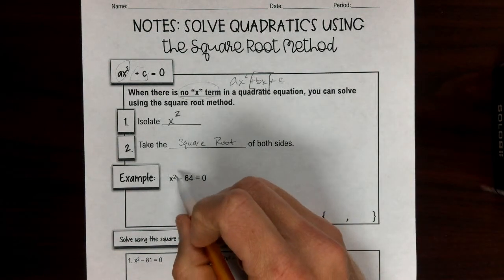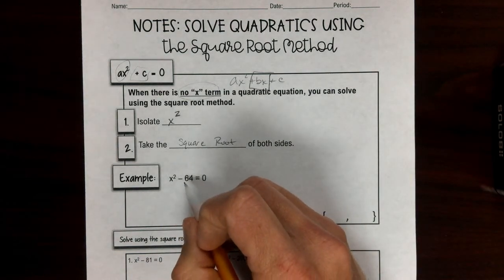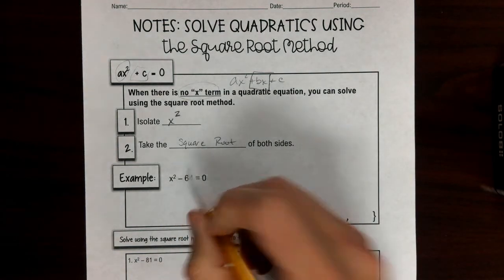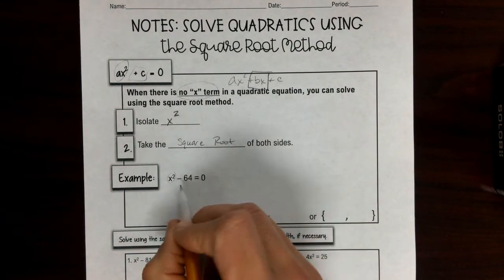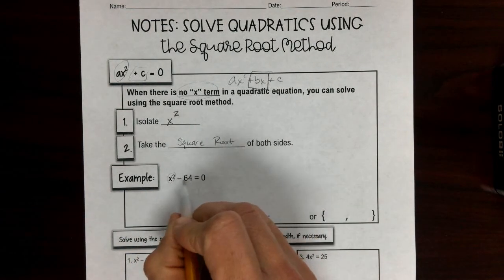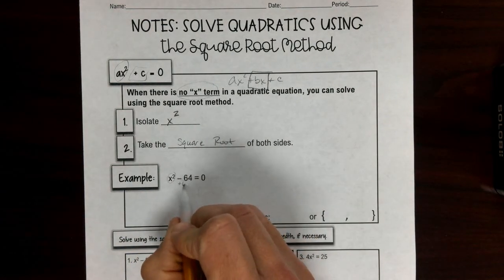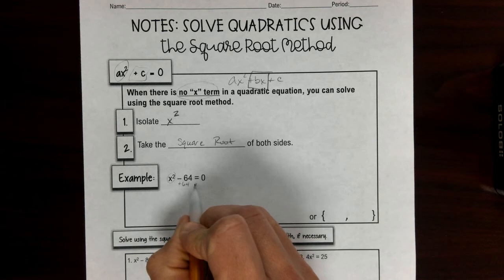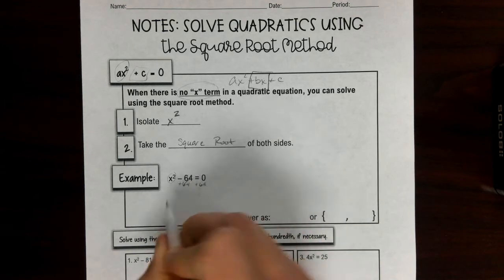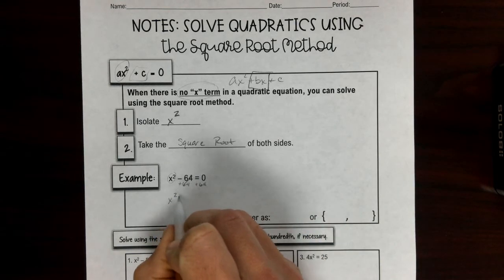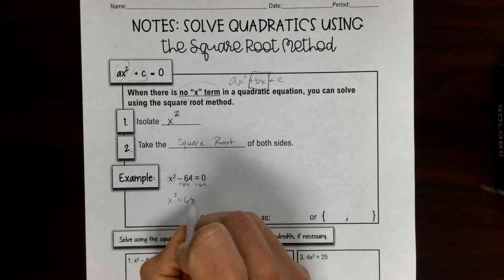For our example: x² - 64. First step is to isolate x². We need to add 64 to both sides to get rid of the minus 64. Those go away, so we get x² = 64.